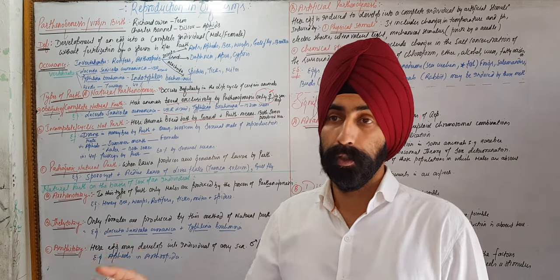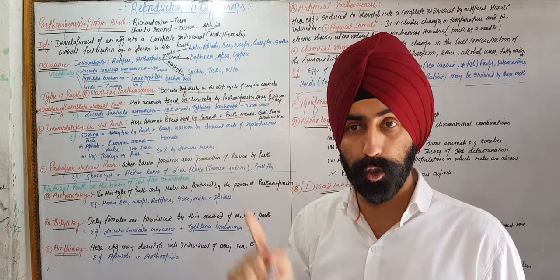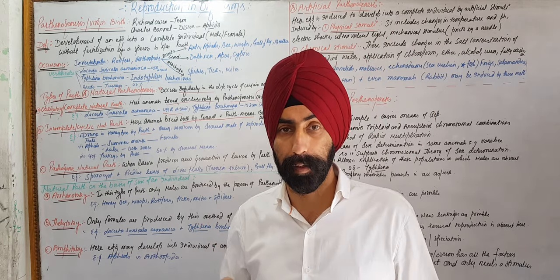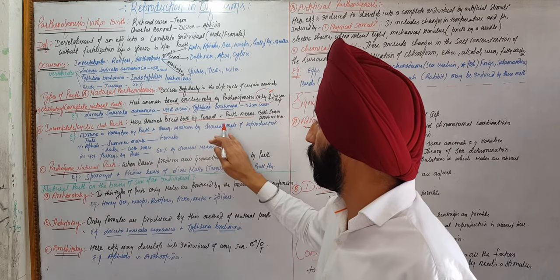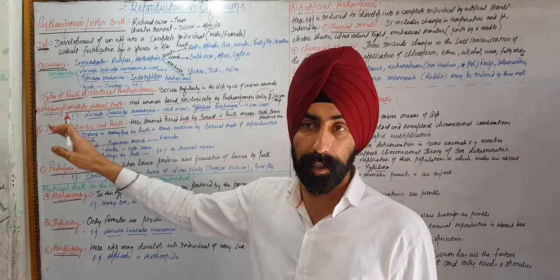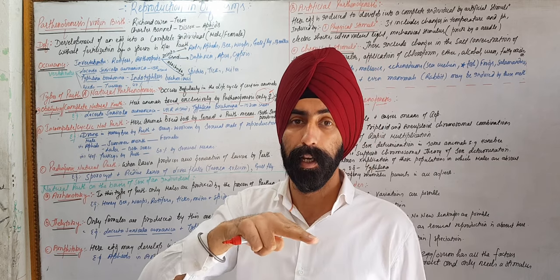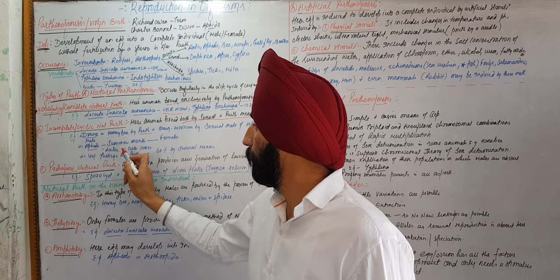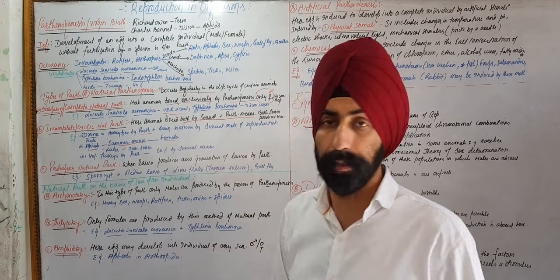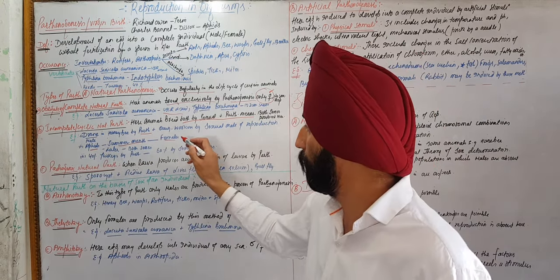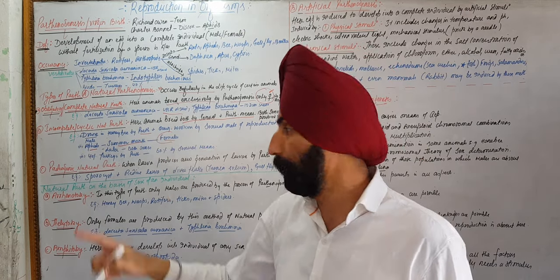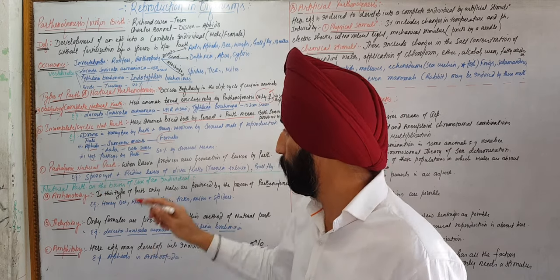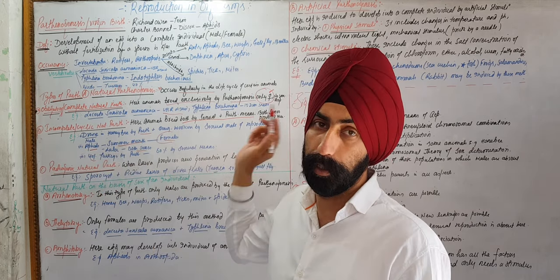In cyclic parthenogenesis, during summer and spring seasons, females are produced by parthenogenesis. Later stages produce both males and females. For example, turkeys reproduce about 40% by parthenogenesis and 60% by normal sexual means.